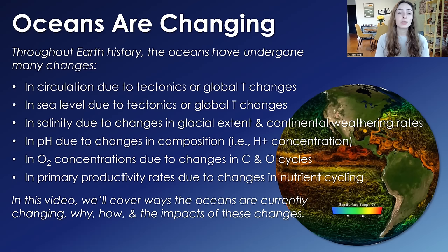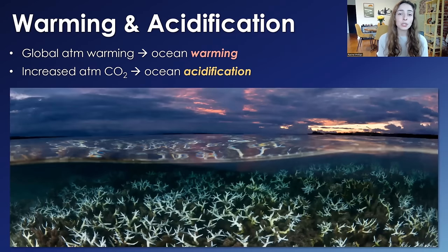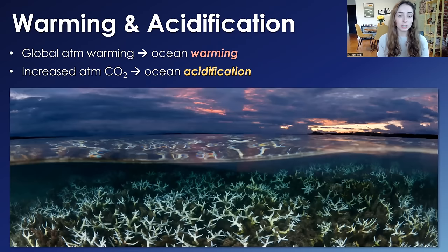In this video, we're going to cover the ways that the oceans are currently changing. Some of these changes have happened over and over in Earth's history, which helps us get a better idea of what we might expect and the impact they might have on modern Earth. The first two that come to mind are: one, warming due to the warming atmosphere, and two, increased CO2 due to increased atmospheric CO2.